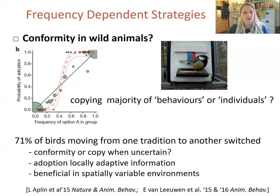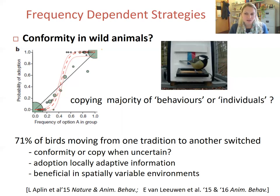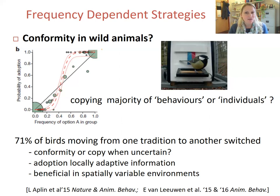However, it's difficult to say whether this apparent conformity can be attributed to frequency-dependent patterns or a state-based copy-when-uncertain type strategy — much like the example with wild vervet monkeys from the previous lecture segment. Regardless, this study emphasises how social learning in immigrants could aid adoption of locally adaptive information, which would be especially useful in a spatially variable environment where 'when in Rome, do as the Romans do' would really make sense for survival.